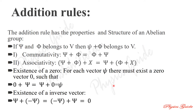By defining the linear vector space, we first define two sets of elements: the set of vectors and the set of scalars. Within the set of vectors, we have different properties and rules — the first is the addition rules and the second is the multiplication rules.